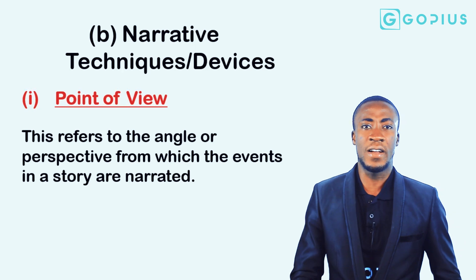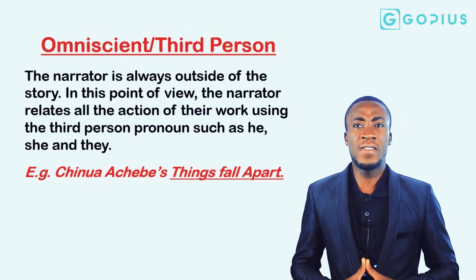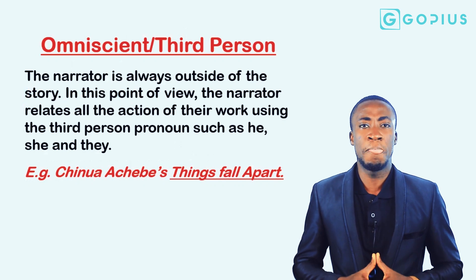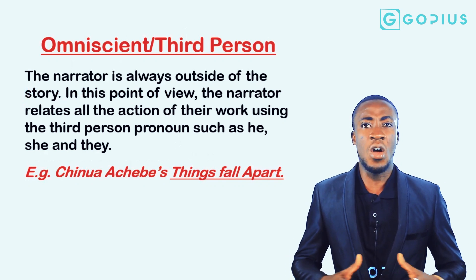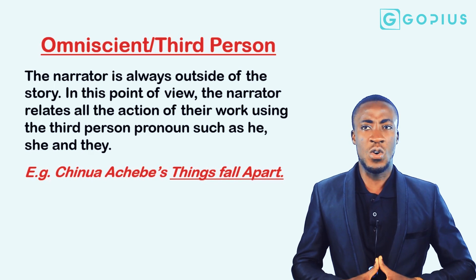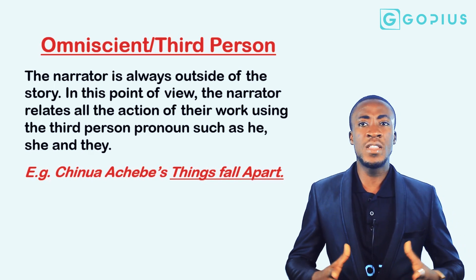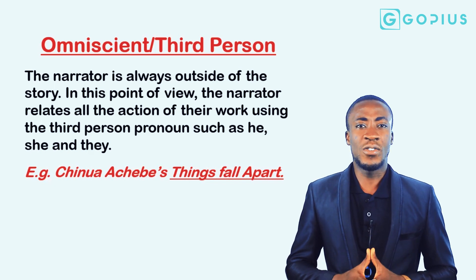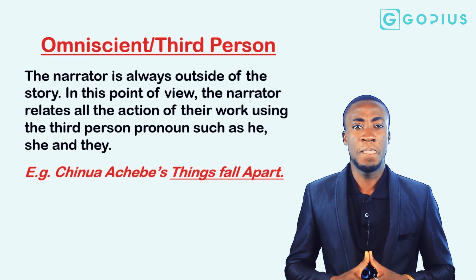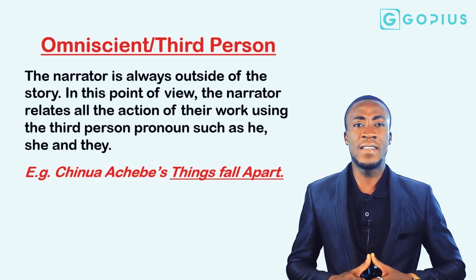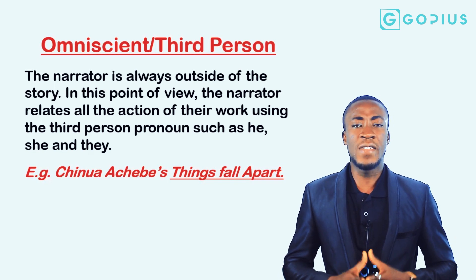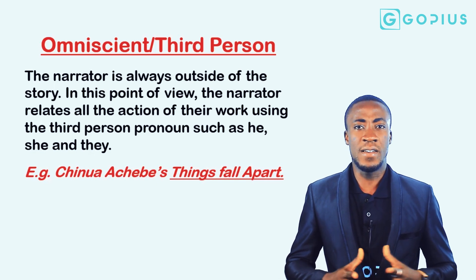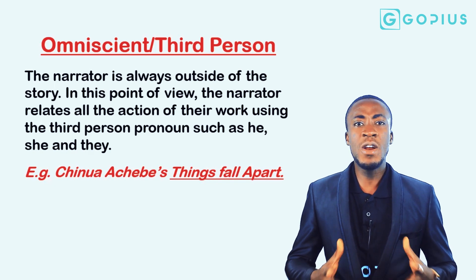Let's look at the types of narrative techniques in prose. The first is the omniscient or third-person narrative style. The narrator is always outside of the story, and in this point of view the narrator relates all the action using third-person personal pronouns such as 'he,' 'she,' 'they,' and the like. A practical example is the narrative style employed in Chinua Achebe's masterpiece titled Things Fall Apart.